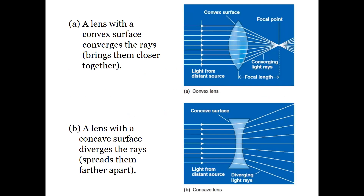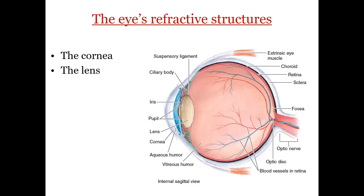There are two types of lenses: the convex lens and the concave lens. The convex lens converges the light rays, bringing them close to each other, and the concave lens diverges the light rays, spreading them apart from each other.